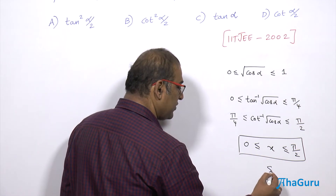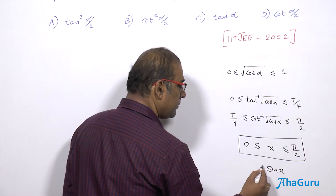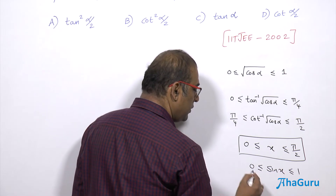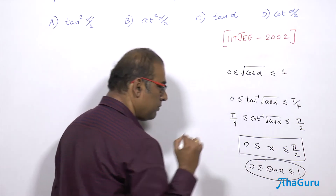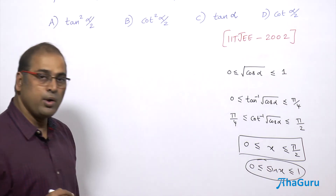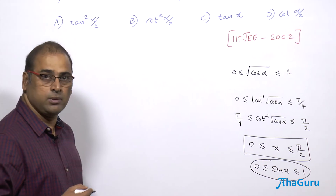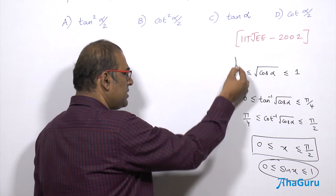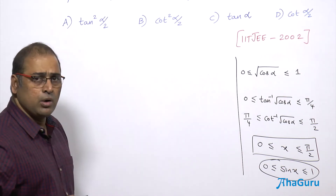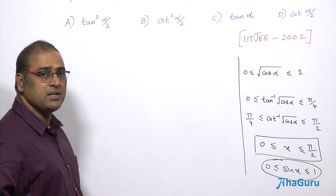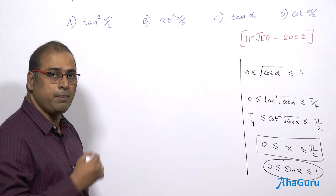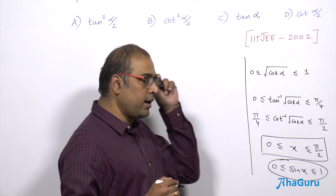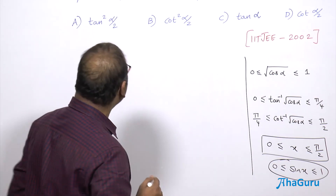Therefore sin x is going to be in the range of 0 to 1, so sin x is non-negative. We keep this in mind because later we may get something like ±√(something), and we can eliminate the negative root since we know sin x is non-negative.